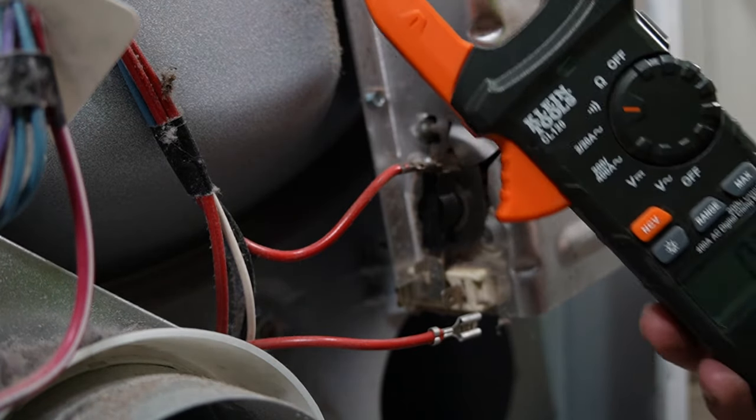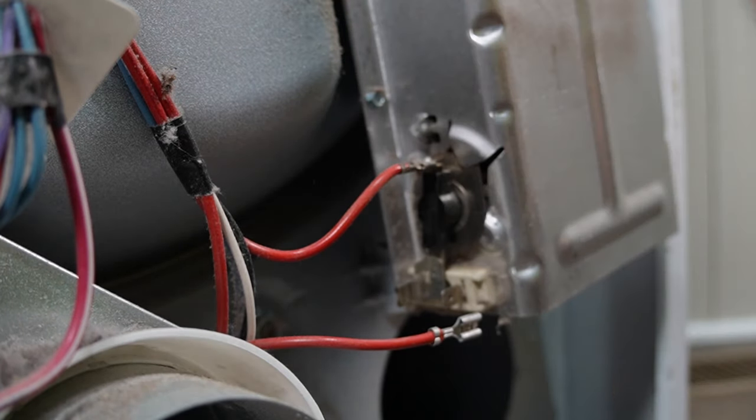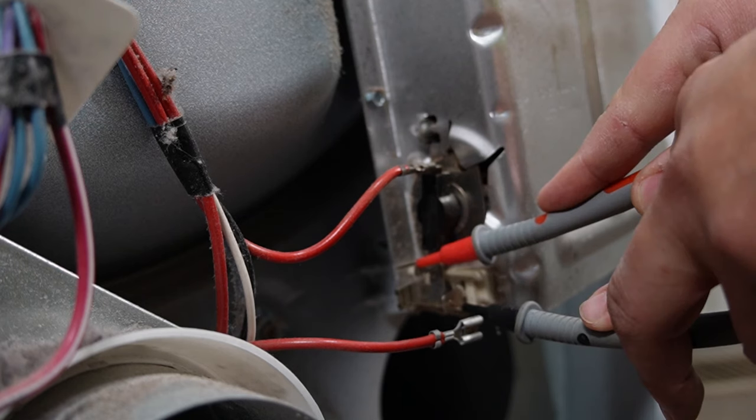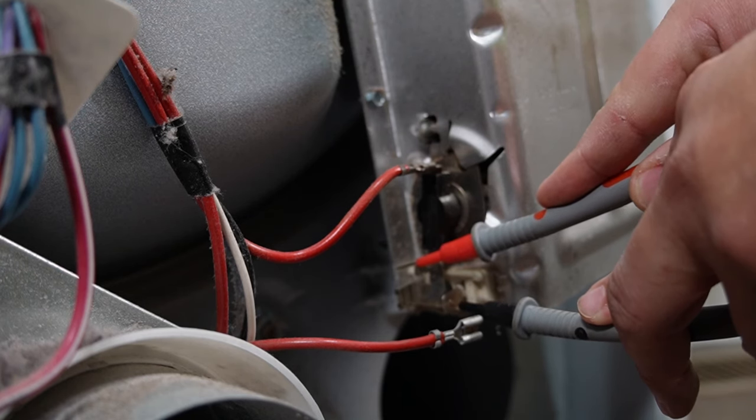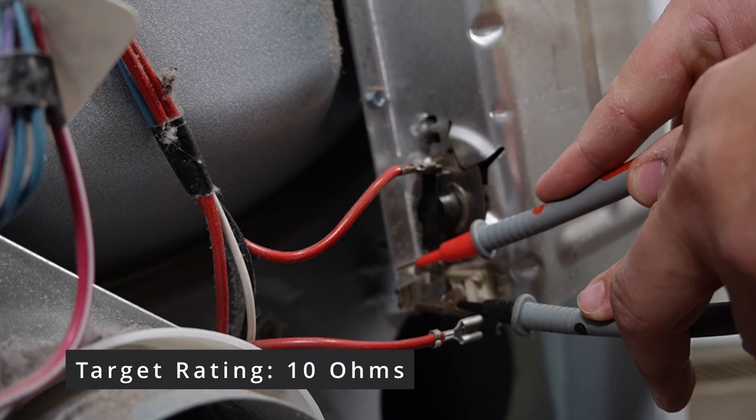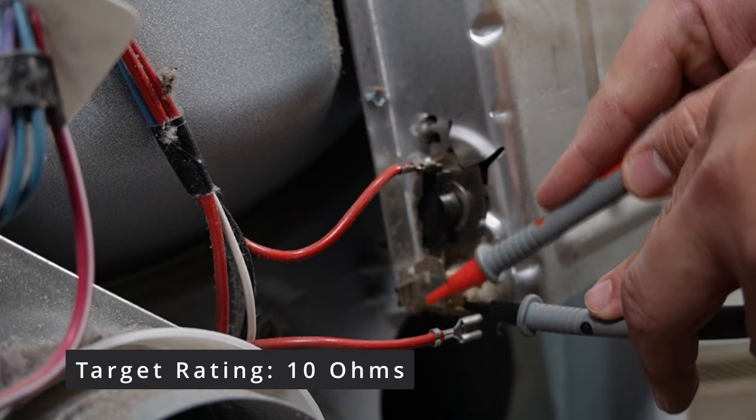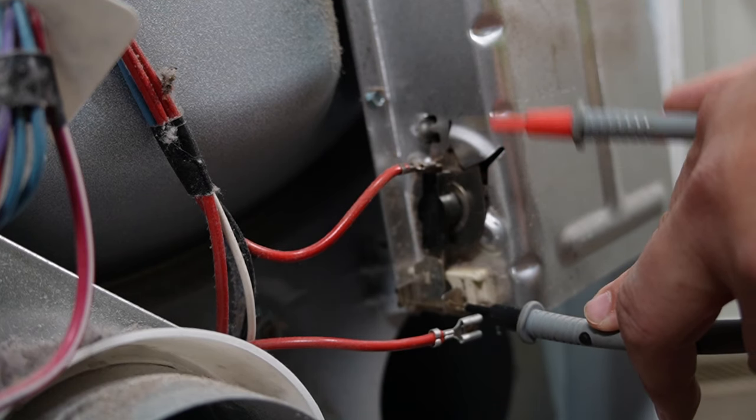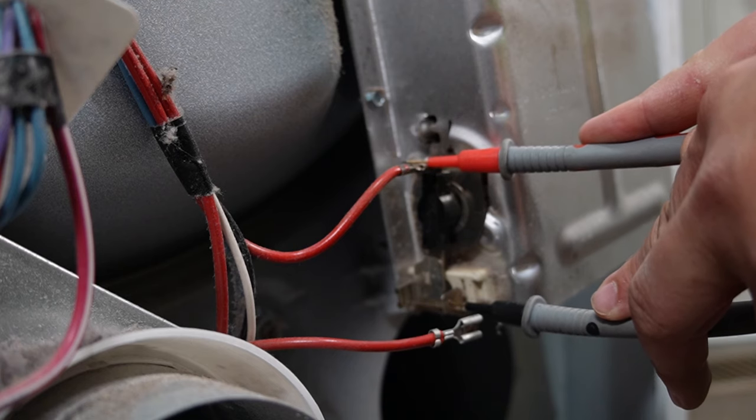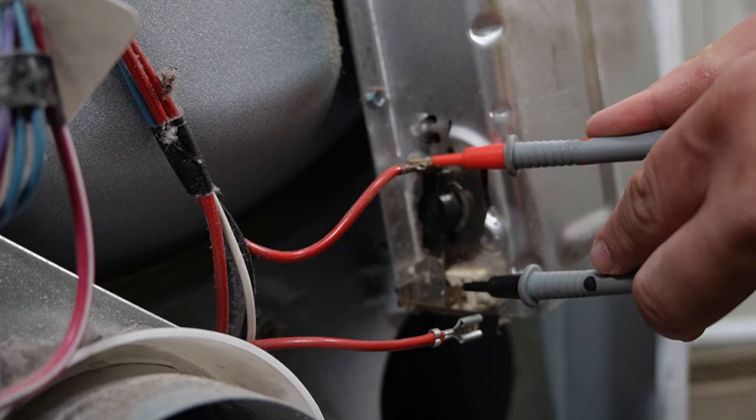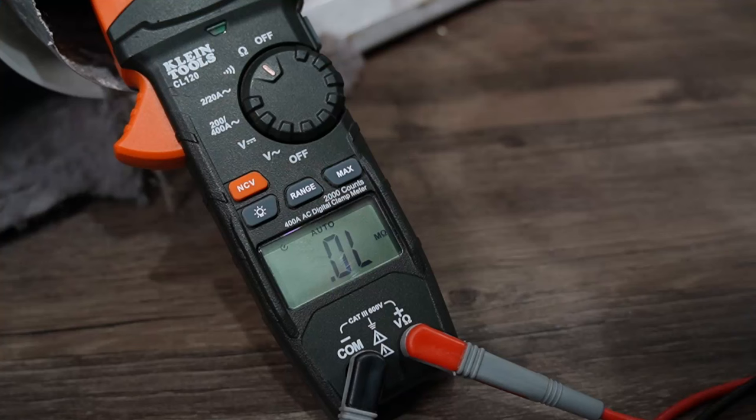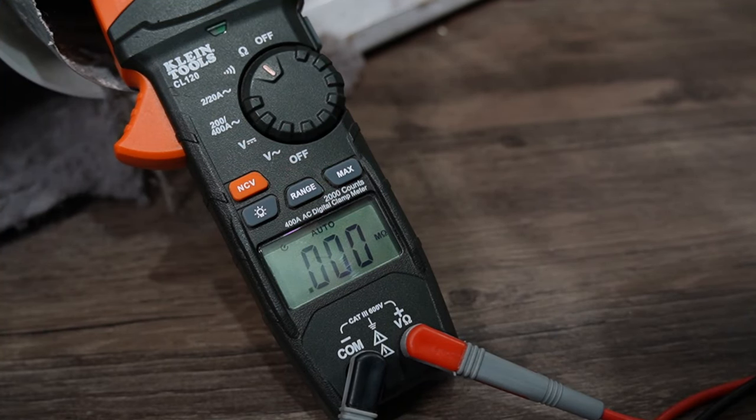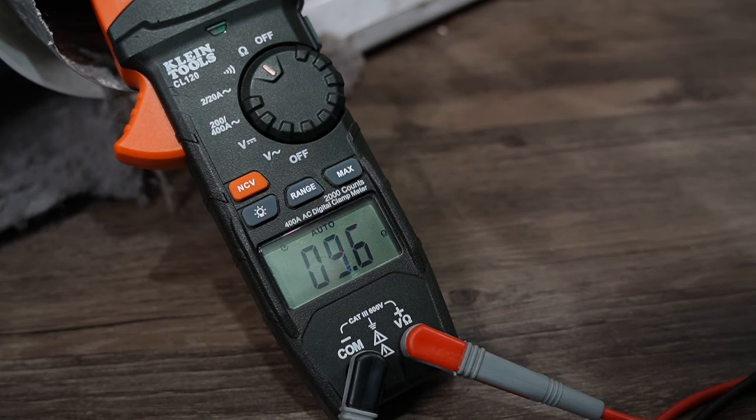For testing, you can use the multimeter in either continuity or ohms resistance. You're going to put one lead on one side of the element connectors, then the other lead on the other connector. Or you can also use the leads on the top of the thermostat and then the other spade connector on the element, and it'll test both at the same time. You should get between 9 and 10 ohms of resistance on the element if it's good. If it's wildly higher or you don't get any reading at all, chances are it's bad.